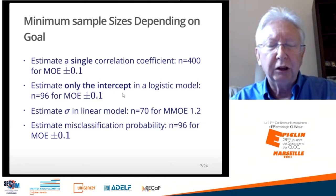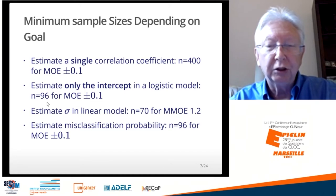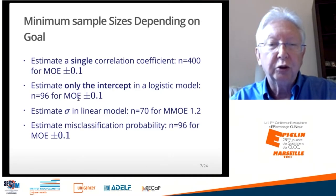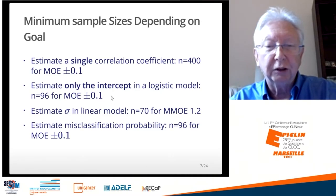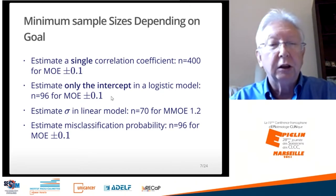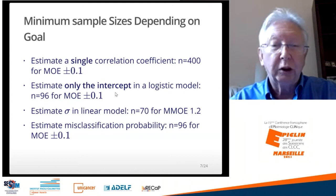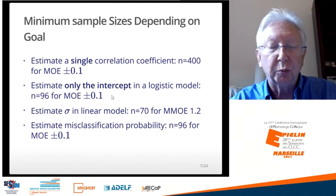If you're estimating the intercept in a logistic model, that takes a minimum sample size of 96. This is the case where P equals 0 — no covariates, no predictors — you're just trying to estimate disease prevalence, which is the same as fitting an intercept in the logistic model. An N of 96 will give you a margin of error of plus or minus 0.1 in estimating a probability of disease. When you add covariates, the sample size needed has to be larger than that.